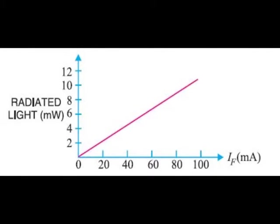This figure shows the graph between radiated light and the forward current of the LED. It is clear from the graph that the intensity of radiated light is directly proportional to the forward current of LED.